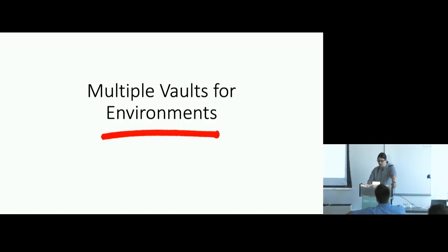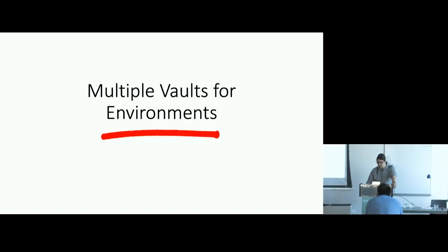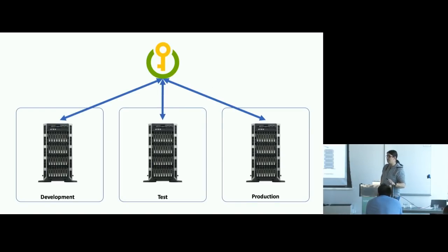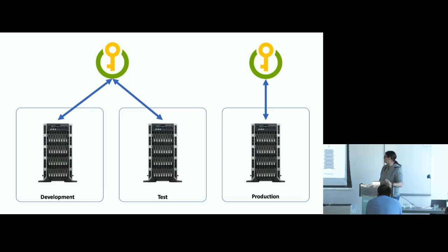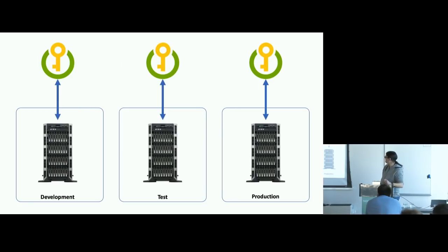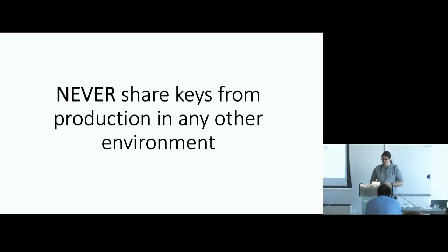Multiple environments: it's common when developing an application to have numerous development, test, and UAT environments before production, with code promoted through them. One thing you don't want is one shared Key Vault used for everything, because that makes your production keys available to test environments. A common approach is to have one shared Key Vault for test environments and a specific one for production. Or if you script your environments, you might have one Key Vault per environment. The key thing is to never share production keys into any other environment — keep it locked down.